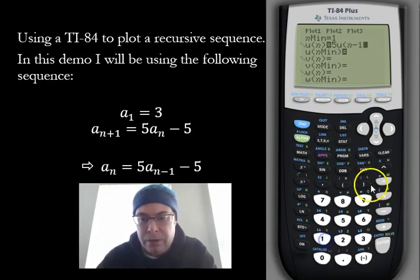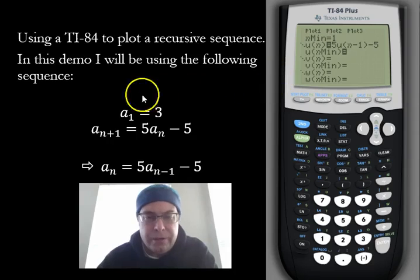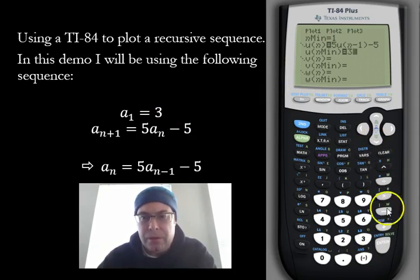So it's going to be n minus 1, and then minus 5. And then u, for the minimum, that's going to be for the initial starting point, which in this case is 3. So when I hit enter there, it's going to automatically put curly braces around that.